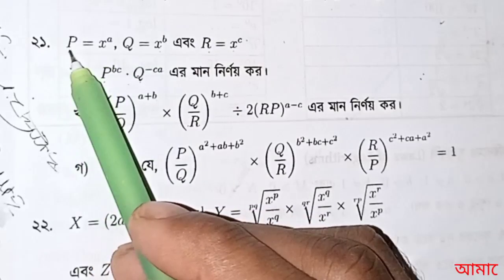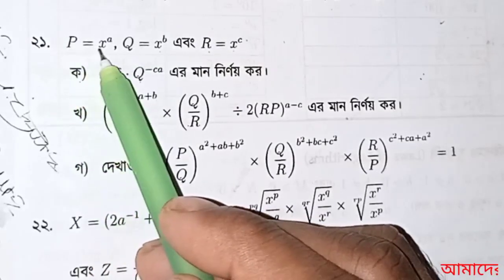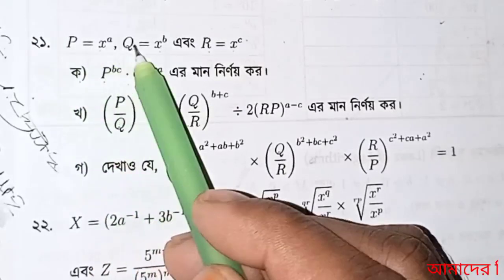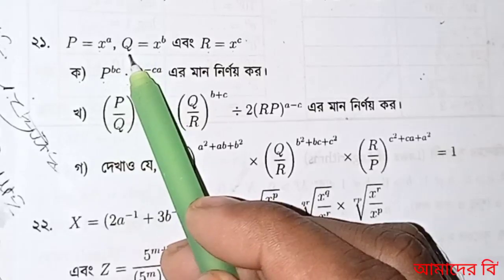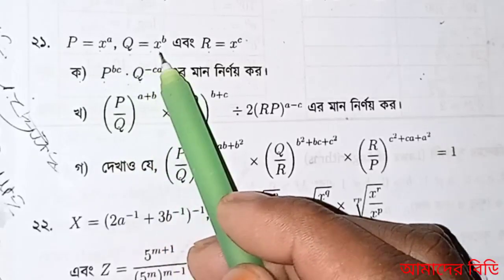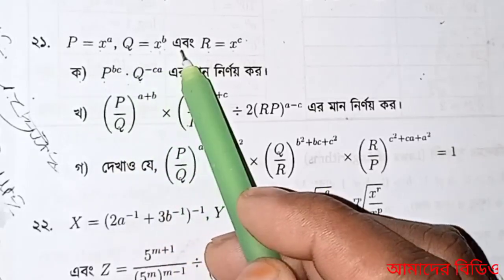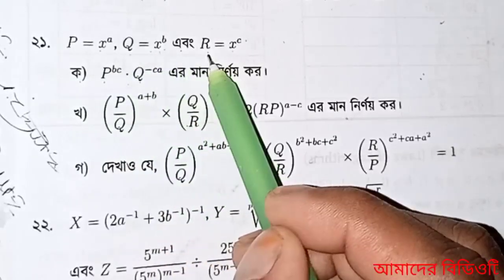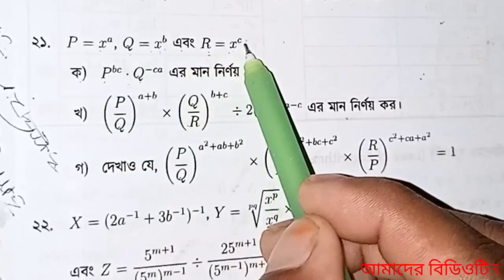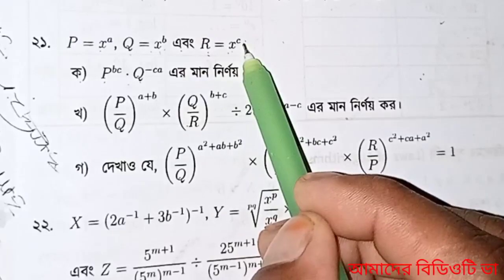Question number A. Given P equal X to the power A, Q equal X to the power B, and R equal X to the power C.